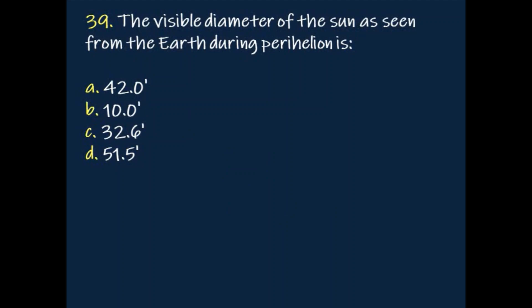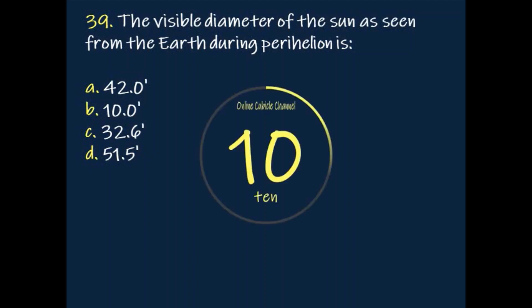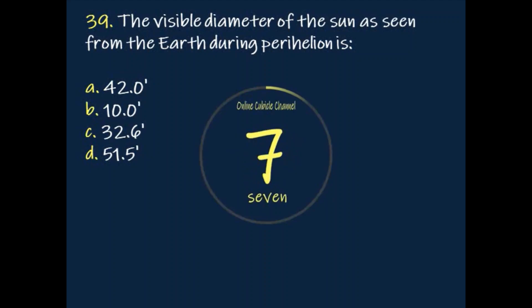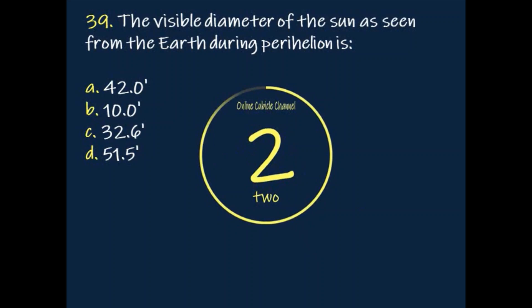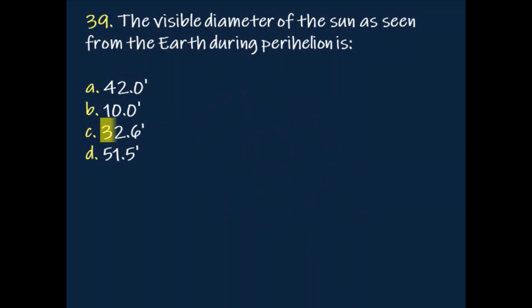Question: The visible diameter of the sun as seen from the earth during perihelion is? Answer: 32.6 minutes.